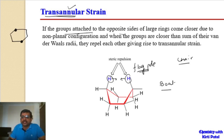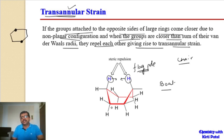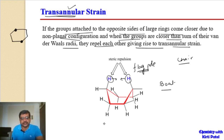If groups attached to opposite sides of large rings come closer due to a non-planar configuration, and if the distance between them is less than the sum of their van der Waals radii, they repel each other. This repulsion gives rise to transannular strain. So transannular strain arises from interactions across the ring in medium to large cycloalkanes.